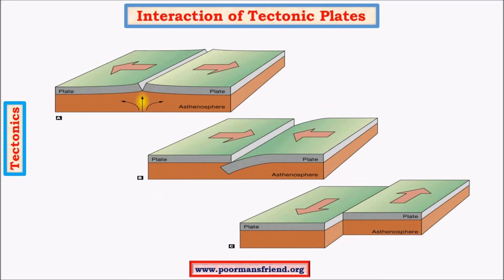Before moving on to divergent plate boundary, let's look at three different types of plate interactions. The first is divergence, also called a constructive edge because a new landform is created at the divergent edges. Then we have the convergent plate boundary — along this boundary there is destruction of the existing landform, so it is called a destructive edge. And there is transform boundary, where two plates slide against each other and there is no destruction or creation of landforms — only sudden deformations happen. The best example is the San Andreas Fault. For convergent edge we have the Indian plate and Eurasian plate; for divergence we have the African and Somalian minor plate, which we will study in this video.